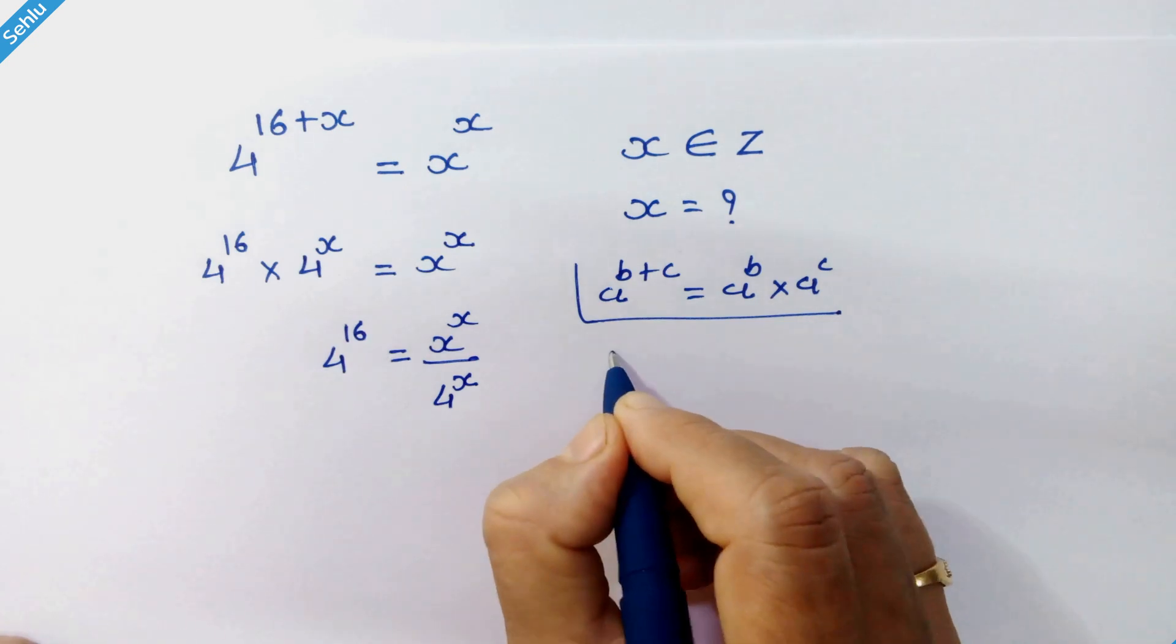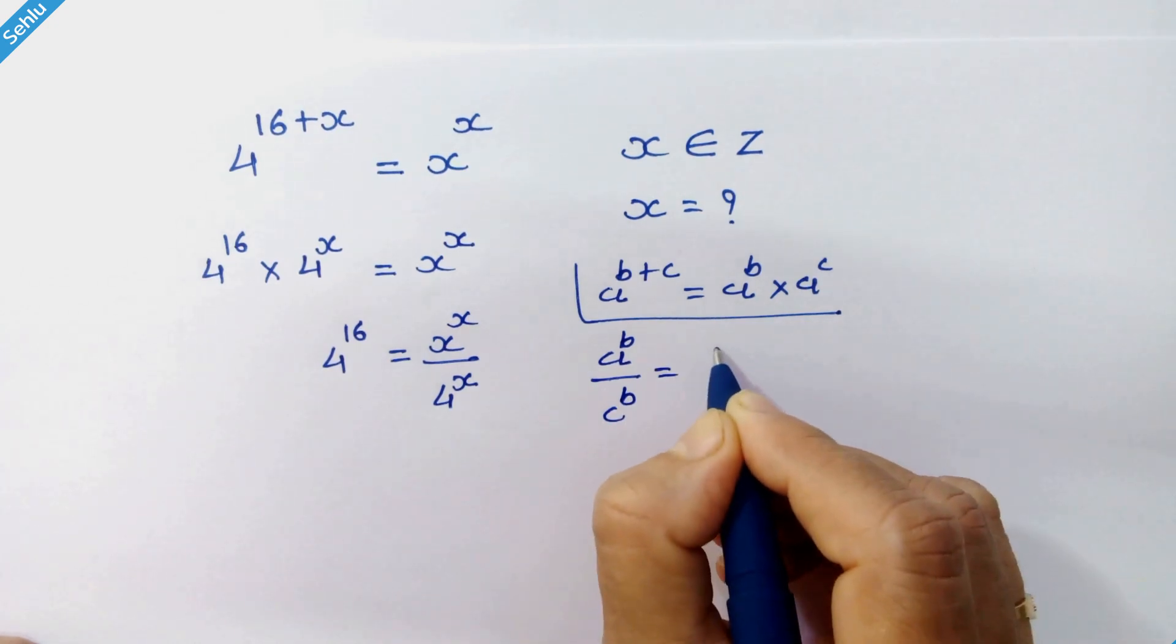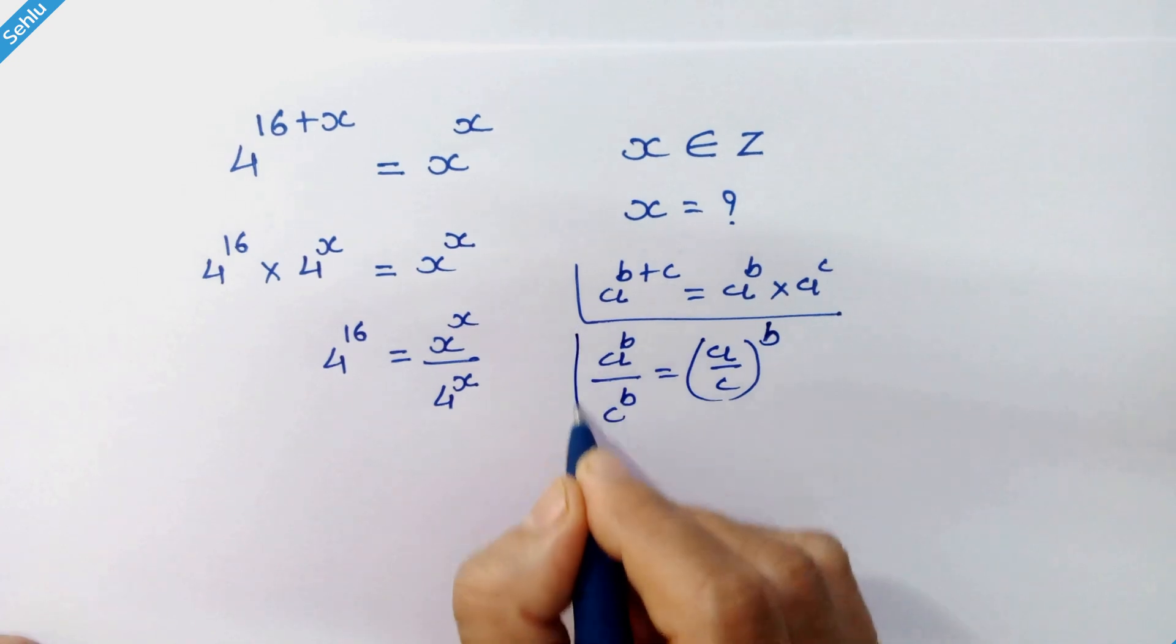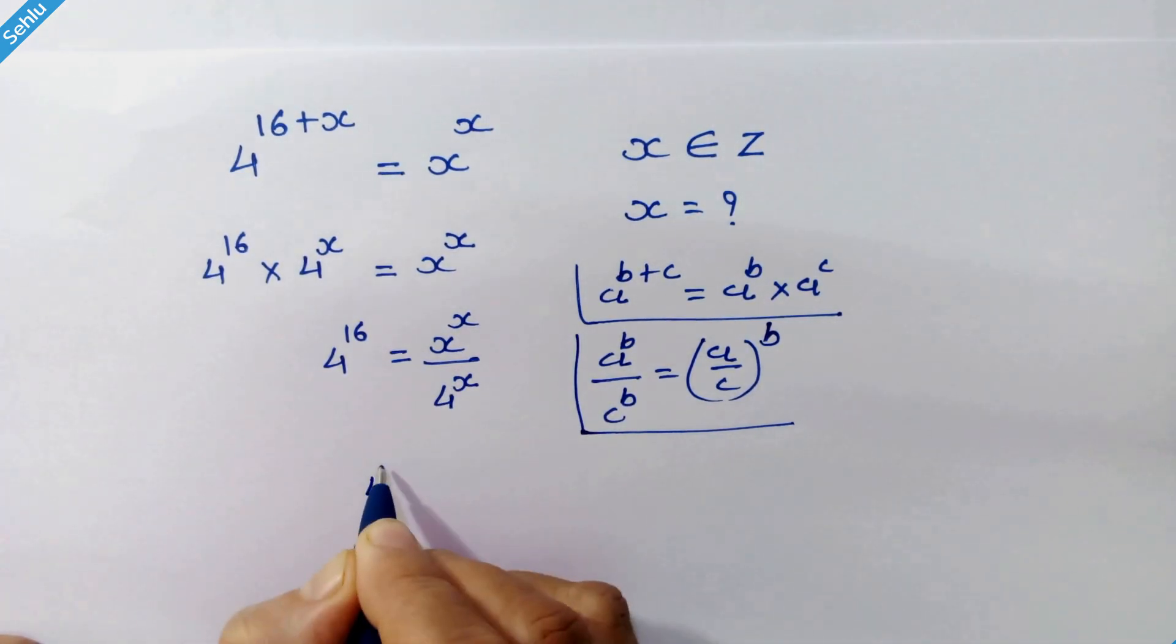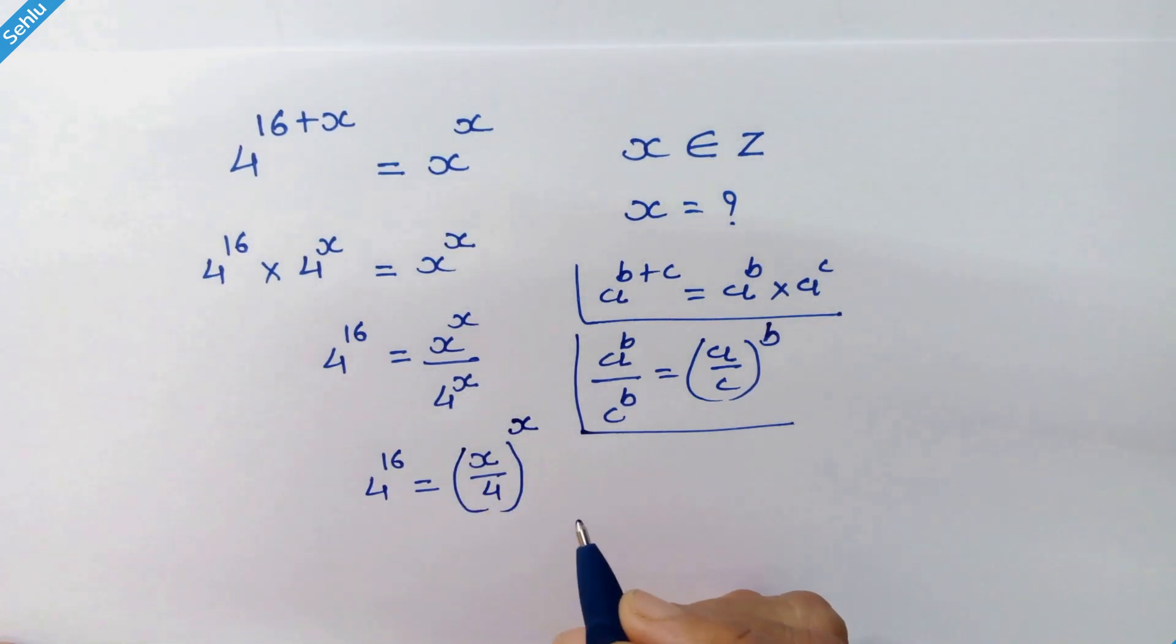Now, as we know, if a raised to b divided by c raised to b, it can be written as a divided by c, whole raised to b. Let's use this rule here. So we have 4 raised to 16 equals x divided by 4, whole raised to x.